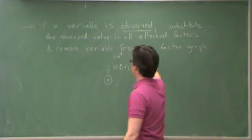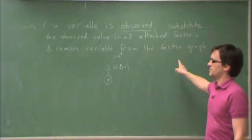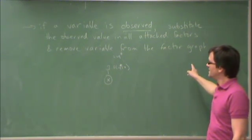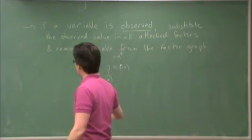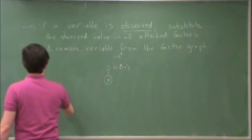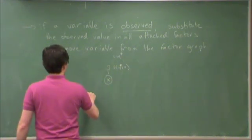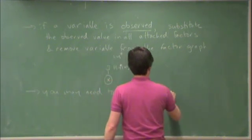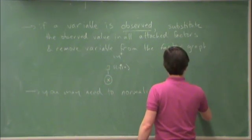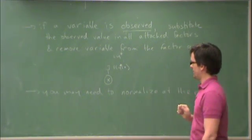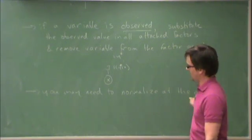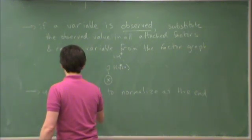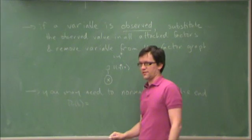Now, a consequence of this, this does not respect the rules of probability necessarily, but it turns out that what you can do is you may need to normalize at the end. So the only thing that this doesn't respect is normalization. And by normalize at the end, I mean like, for instance, if I had probability of b, and I had that as a function of a bunch of messages, let's say mu1 of b and mu2 of b.